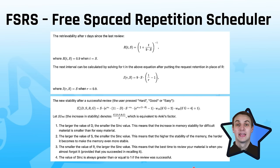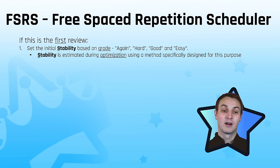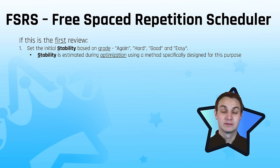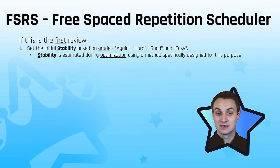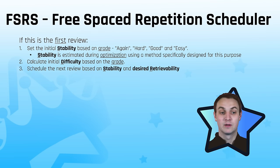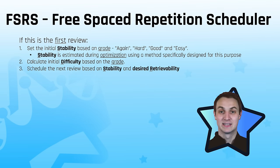Here's the simple version. On the first Anki review, FSRS sets the initial stability of that card based on the grade, estimated during optimization. If you've done at least a thousand reviews, it will optimize and look at your review history to adjust those parameters to better match you — individualizing it to your content. The difficulty is set similarly, and the next review is scheduled based off that stability and your desired retrievability. You select your target — say 90% retention — and it schedules accordingly. You can re-optimize every month and it will continue to improve.